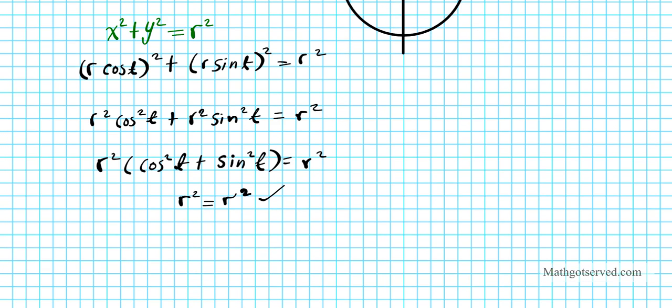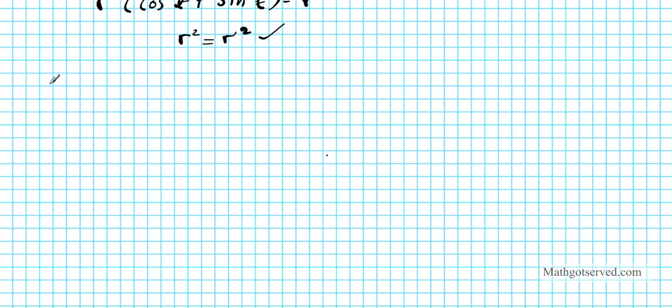So the task we want to accomplish is to show that the circumference of a circle with radius r — that is, C equals 2 pi r — is true using the arc length parameterization formula and the parametric representation of the circle.